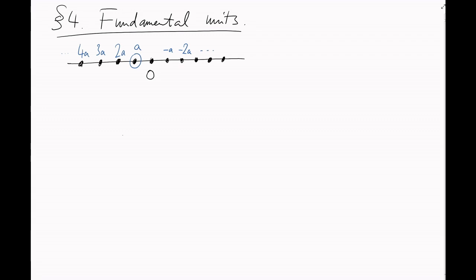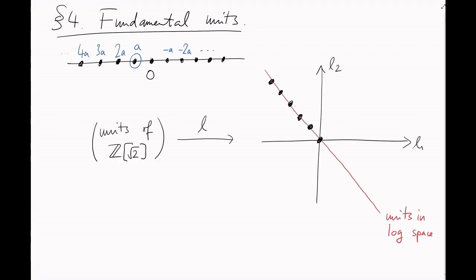So in the logarithm space associated to z to join root 2, our units lie on a one-dimensional lattice. Can we find one of these two points nearest the origin?